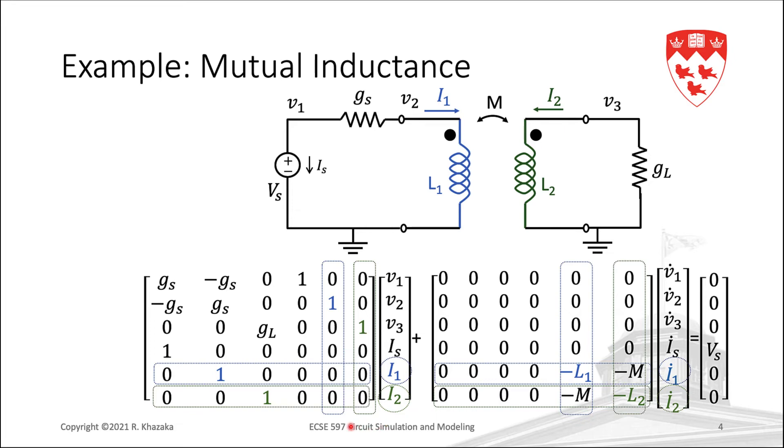Now we can look at the mutual inductance. Its contribution to the MNA appears in the C matrix as the off-diagonal entries in the new row and new columns associated with the two inductors, as we see in red, minus M, and M. So the strategy is then to add the two inductor stamps first, and treat the mutual inductance as its own element with a stamp of minus M as the off-diagonal entries.